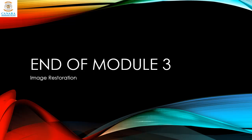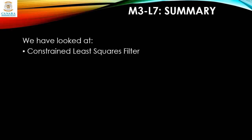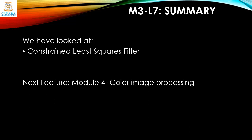This marks the end of Module 3 on image restoration. In the next module we will learn about color image processing, wavelets, and morphological image processing. In this lecture we looked at the Constrained Least Squares filter, also known as the CLS filter, studied how to optimize its parameters, and how it differs from the Wiener filter in terms of pros and cons. In the next lecture we'll learn about color image processing as part of Module 4. Thank you.